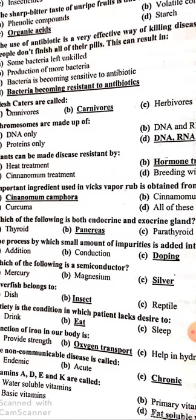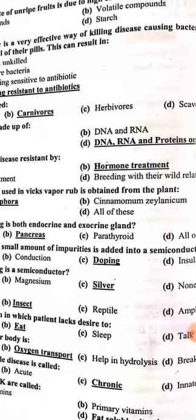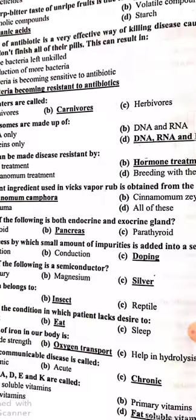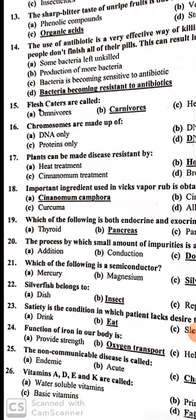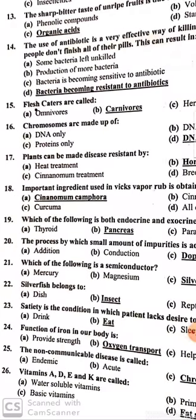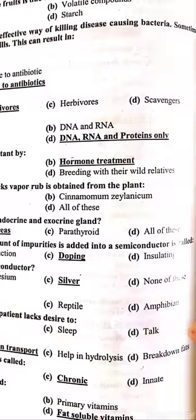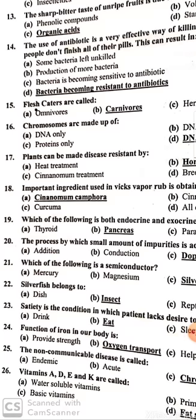Which of the following is a semiconductor? Silver is not a semiconductor — silver is a full conductor. Magnesium and mercury are also conductors, so none of the above is the answer.